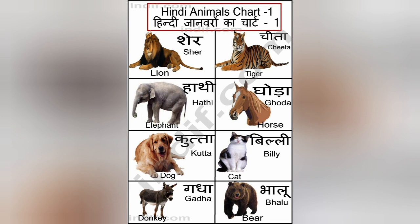Kutta — dog. Billy — cat. Gatha — donkey. Bhalubya — bear.